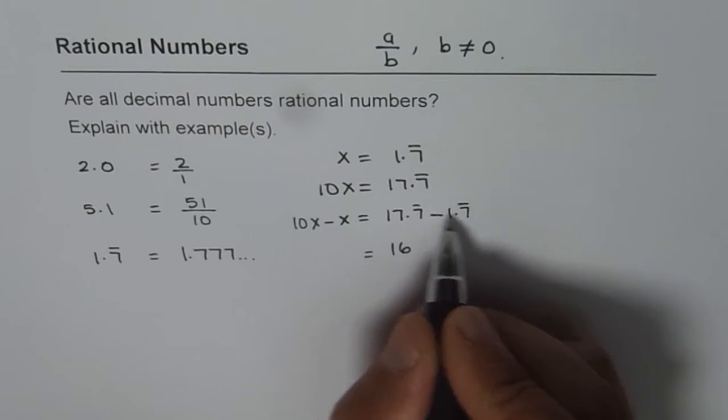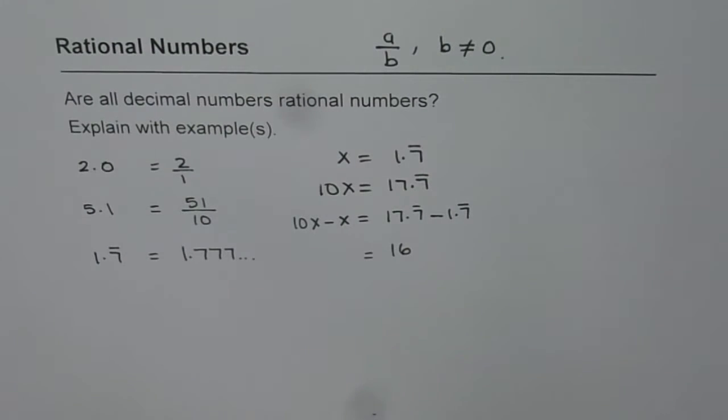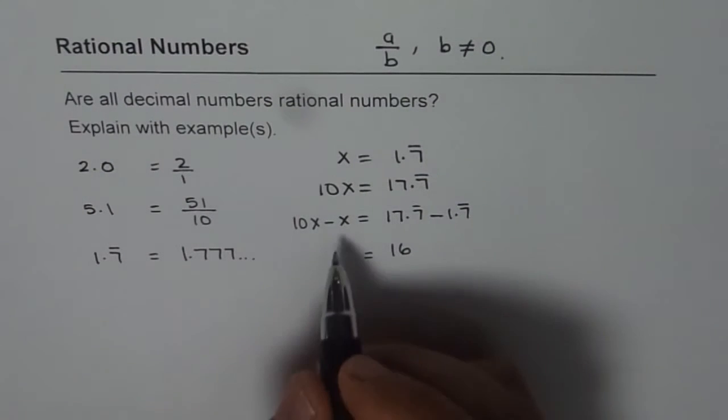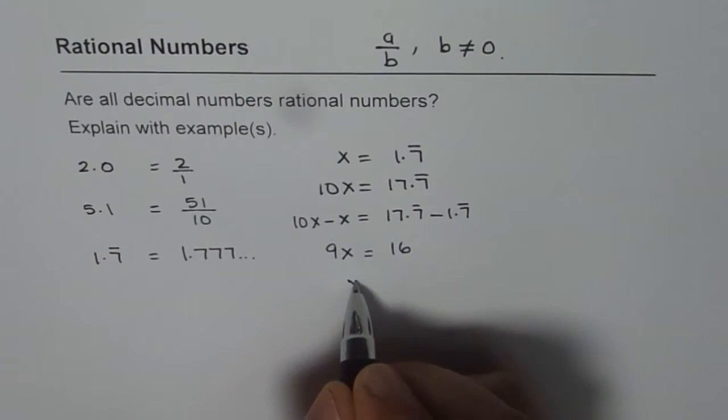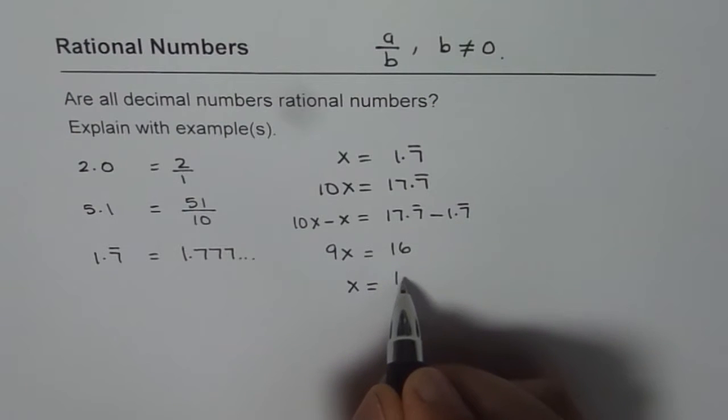After decimal, all those 7s, they cancel out. On the left side, we get 10 minus 1, which is 9x. And therefore, I can write x as 16 over 9.